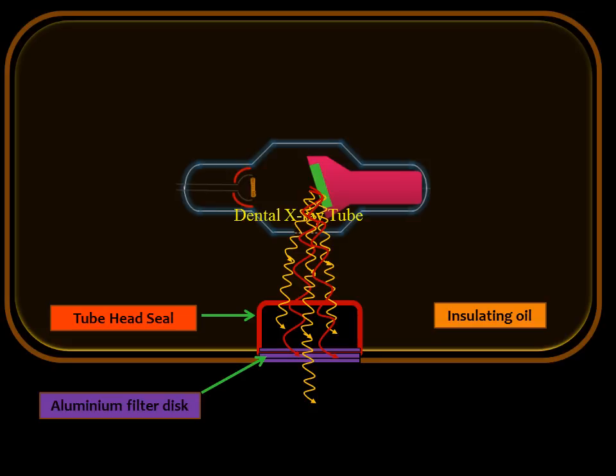Now we know that the x-rays cannot be focused and are always divergent, so in order to resize and reshape the x-rays we use something called collimators. Collimators are added in the x-ray tube so as to reduce the size and shape of the x-rays that exit out of the x-ray tube head.